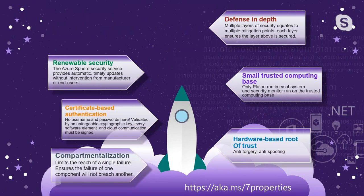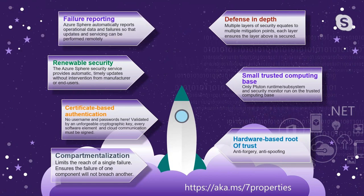Fifth, certificate-based authentication — no usernames and passwords. The Pluton system validates with an unforgeable cryptographic key, and every software element and cloud communication must be signed with these keys to remain valid. Sixth, renewable security: the security service provides timely updates without intervention from manufacturers or end users, meaning you wouldn't have to dig up devices to apply a security update. Azure Sphere is fully implemented with over-the-air updates, so if a large security breach is discovered, Microsoft will update it and it will automatically be downloaded by your devices. Seventh, failure reporting: the Sphere will automatically report operational data and failures so you can react and service the device remotely.